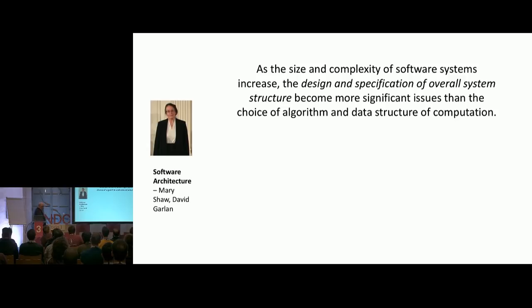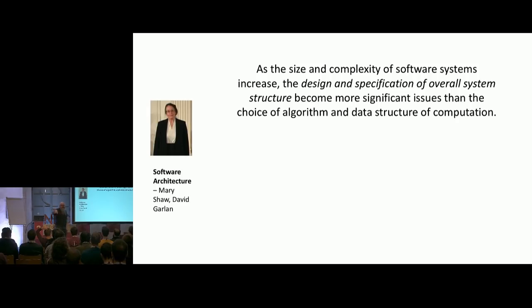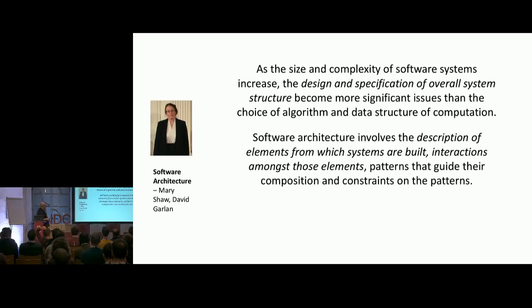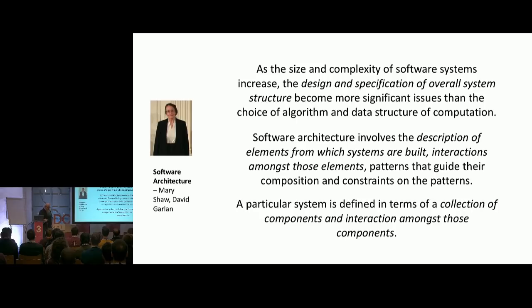When we look at computer science, Mary Shaw and David Garland wrote a book on software architecture in the '90s at Carnegie Mellon. They essentially said: as a system grows, it becomes more important to understand the structure of it than to understand individual algorithms and data structures, because the problems exist at a macro rather than micro scale. Software architecture could be defined as the description of large elements and the interactions between them — it's a series of components and the interactions between them.